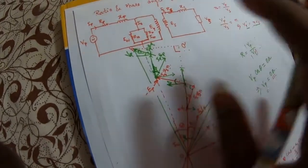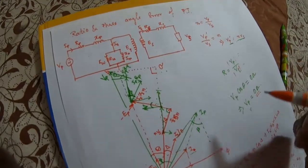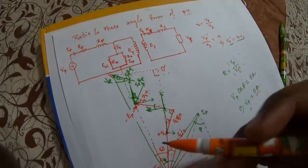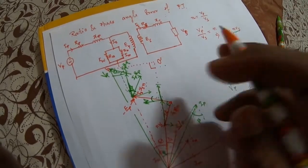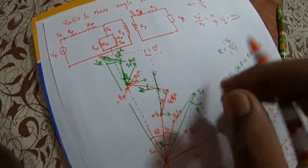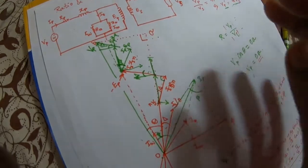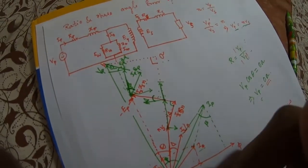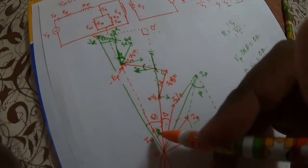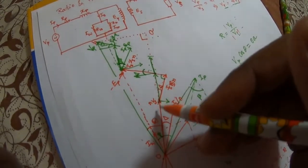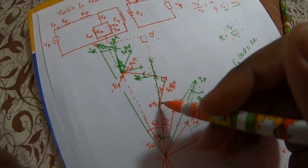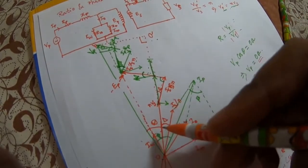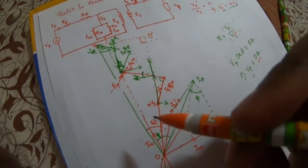If there is no voltage drop and no loss, then the secondary side voltage and the primary side voltage should be in the same phase — there should not be any angle. But because of the magnetizing component and these losses, we have a certain loss and a certain angle. Because of that, it gets displaced by a certain angle θ. That is why we have the angle θ between nVs and Vp.